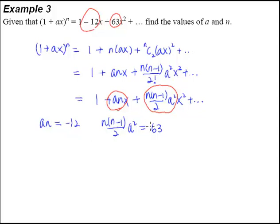All we have to do now is just to solve this pair of simultaneous equations in order to get the value of a and n. So from this equation, we know that a is equal to negative 12 over n. So we substitute in this a into this equation too. We will get n multiplied by n minus 1 divided by 2 multiplied by a squared. So it will be negative 12 over n squared is equal to 63.